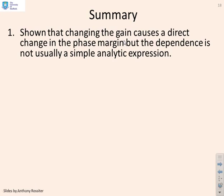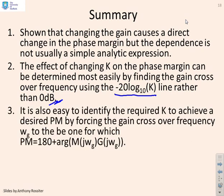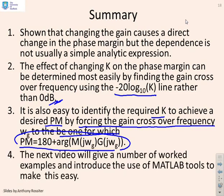In summary: changing the gain causes a direct change in phase margin, but the dependence is not usually a simple analytic expression. The effect of changing k is most easily determined by finding the gain crossover frequency using the minus 20·log₁₀(k) line rather than 0 dB. To achieve a desired phase margin, force the gain crossover frequency to be the one satisfying the phase condition, then find the corresponding k. The next video gives worked examples and further MATLAB practice to master these skills.